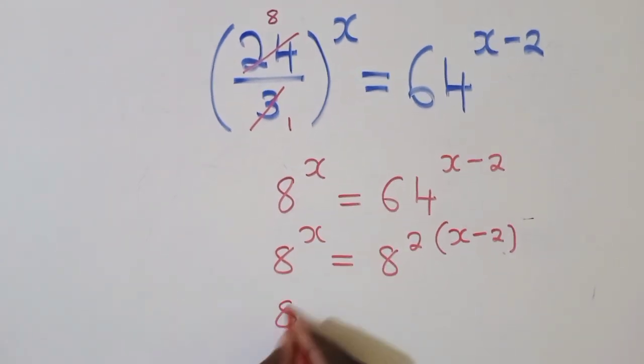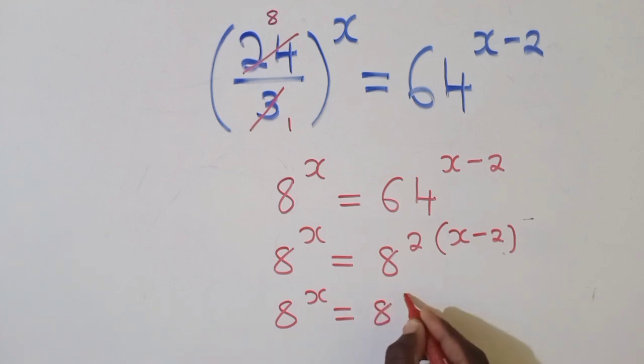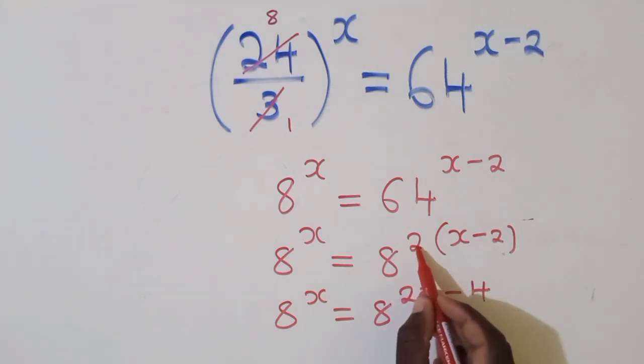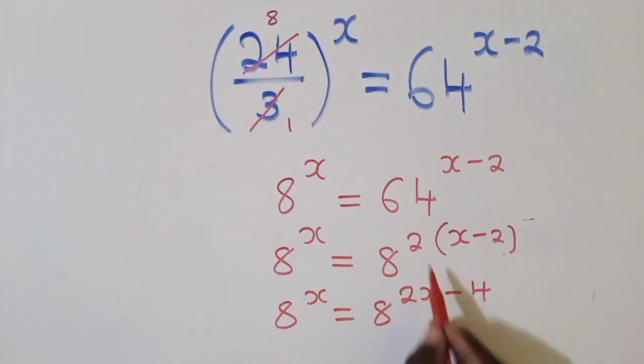We shall have 8 power x is equal to 8 power 2x minus 4. Because this 2 times x is 2x, 2 times negative 2 is negative 4.